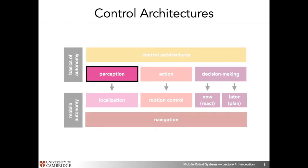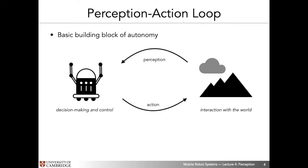Where does sensing and perception lie in the overall course outline? We have this perception element where we look at how perception is used in the context of ground robots — essentially using perception to either localize or navigate to places. That is the general idea to keep in mind as we go through the various sensors and sensing fundamentals in this lecture.